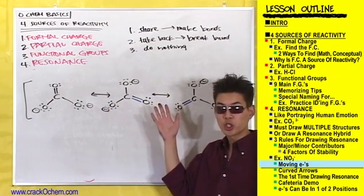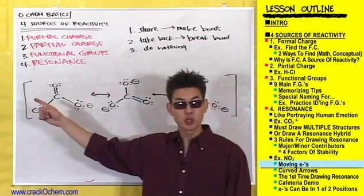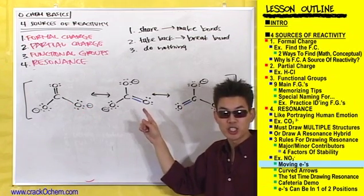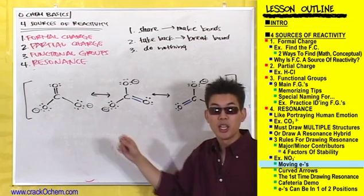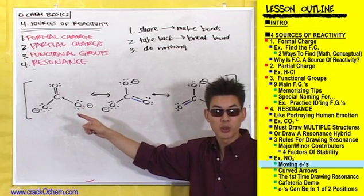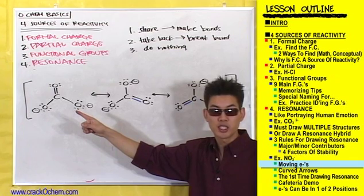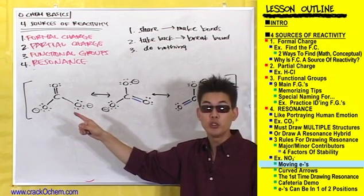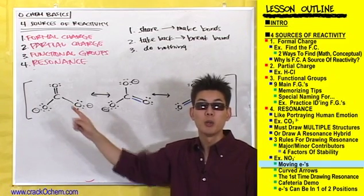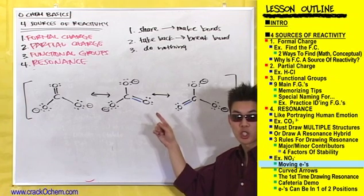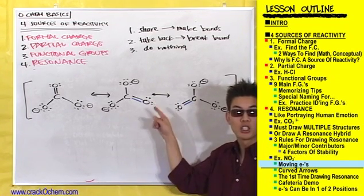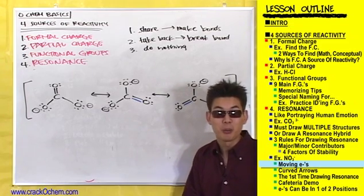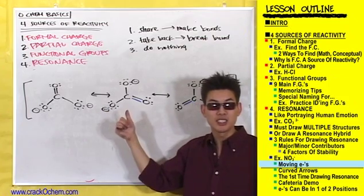Here are the three resonance structures for CO3²⁻. In the first resonance structure, the oxygen on the right has lone pairs and is single bonded to carbon. To get to the second resonance structure, that oxygen uses one of its three lone pairs to form a double bond with the carbon — it moves two of its electrons from a lone pair into a double bond. In the second resonance structure, that oxygen now only has two lone pairs, because it moved one lone pair toward the carbon to make a bond.